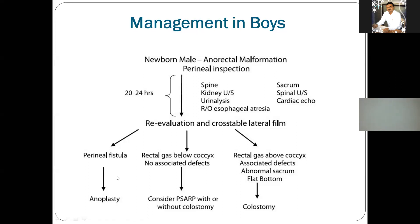In case of perineal fistula, when you re-evaluate and find out a fistular opening — an abnormal single opening in the perineal region, not at the normal anal site but in the midline raphe — this is a minor defect. A simple single procedure, anoplasty, is advised and the baby usually becomes normal. Normal anatomy is restored with no serious consequences after the surgical procedure.